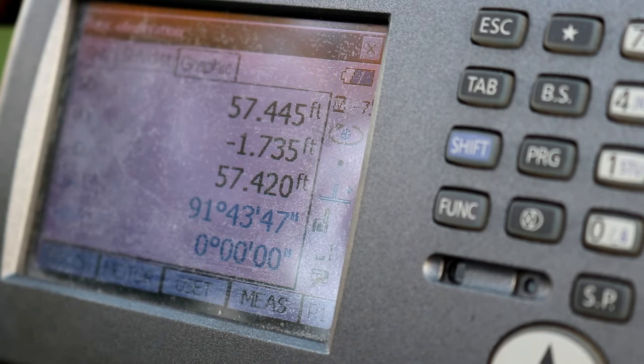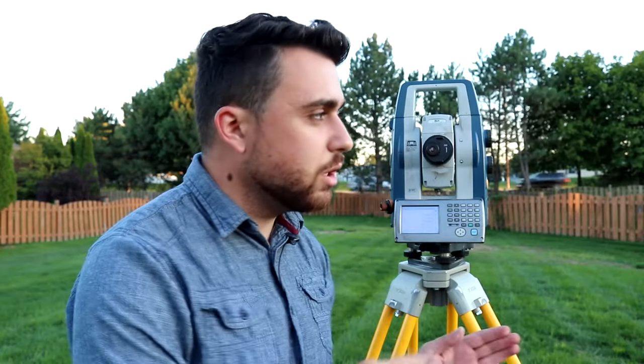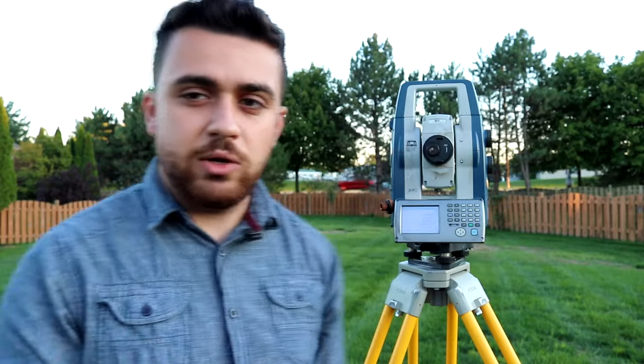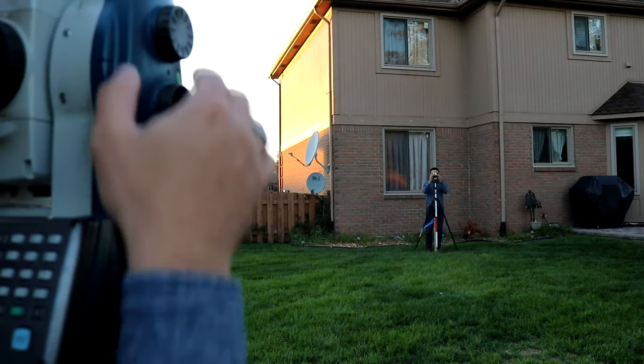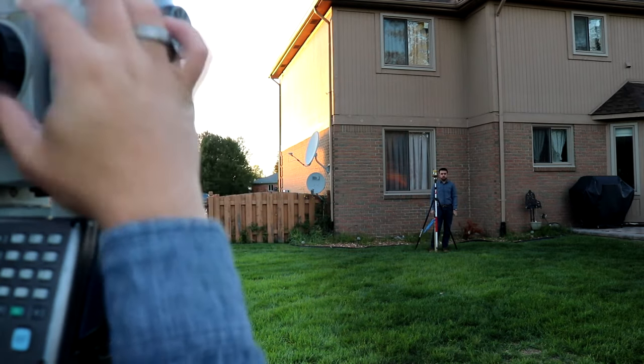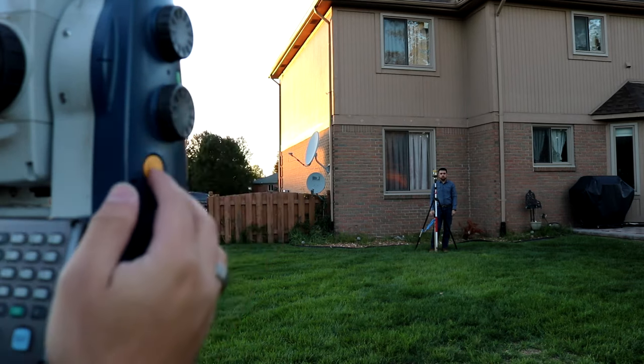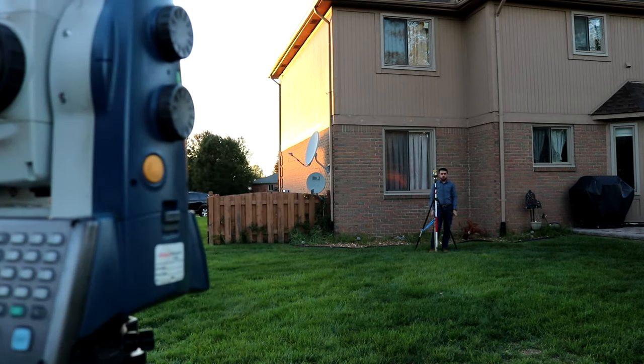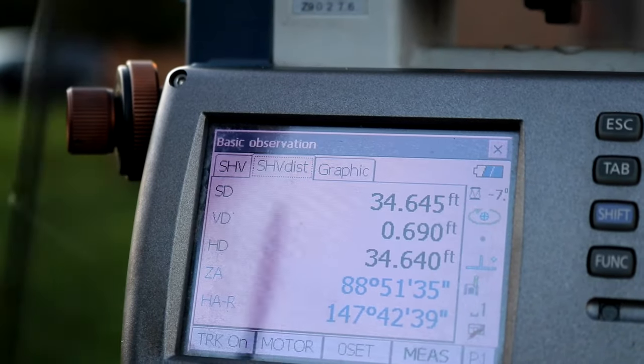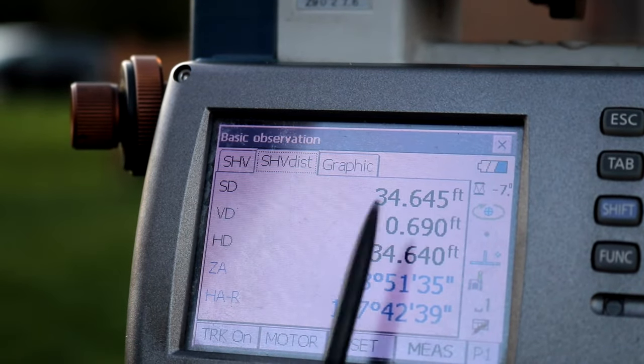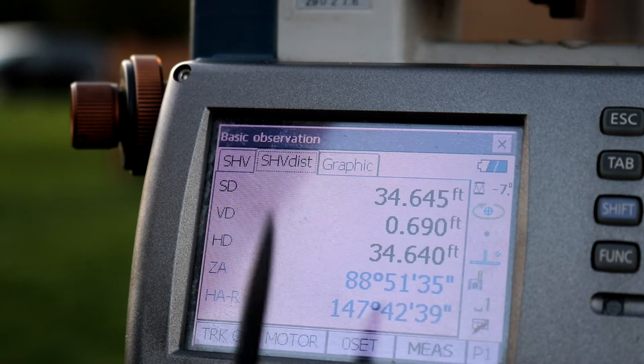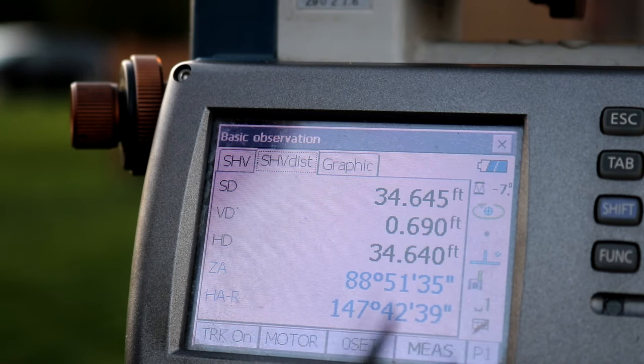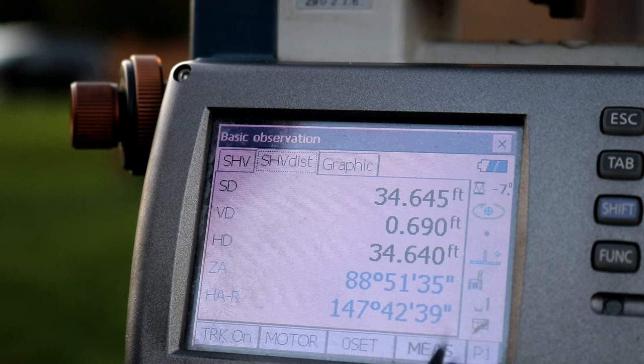To complete the resection, we have to go back to the first point that we shot in order to measure the angle between our last point and the initial first point. So let's go back to point blue. Bring this into focus. To the left. Go up. Right there. Perfect. Measure. Alright, we're good. Alright, here's the final measurement. We see our distance again from the point that we're occupying to point blue. It's 34.645 feet, which matches what we had last time. So that's good. The angle this time between point orange and point blue is 147 degrees, 42 minutes and 39 seconds.